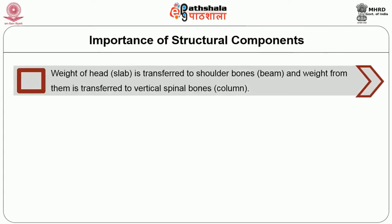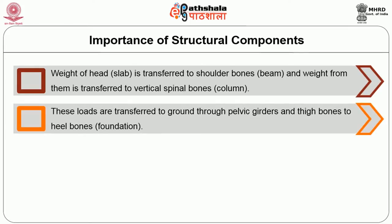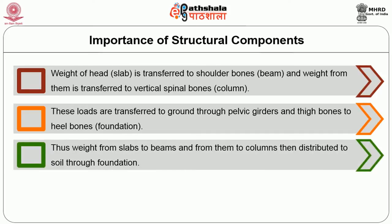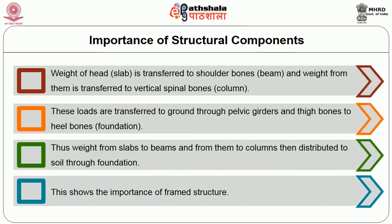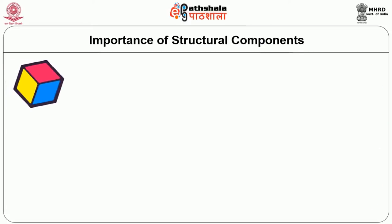From the figure, it is noted that the weight of the head, considered as the slab, is transferred to the shoulder bones — that is the beam — and the weight of them is transferred to the vertical spinal bones — columns — and these loads are transferred to the ground through the pelvic girders and thigh bones to the heel bones. Thus the weight flows from the slabs to the beams, from them to the columns, then distributed to the soil through the foundation. This shows the importance of the framed structure.